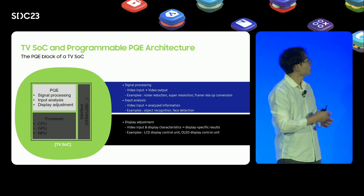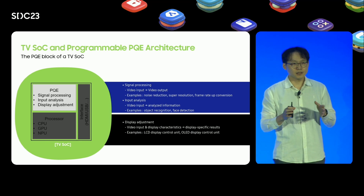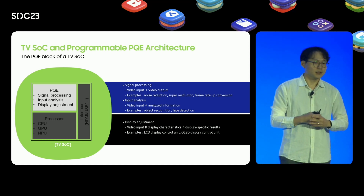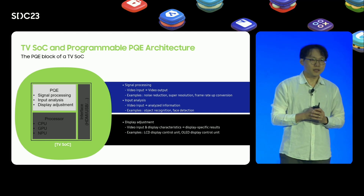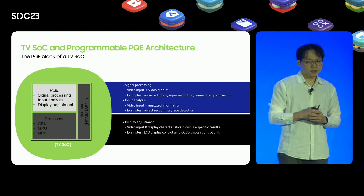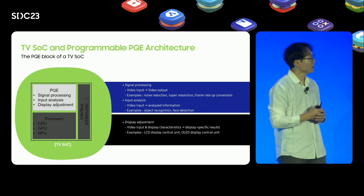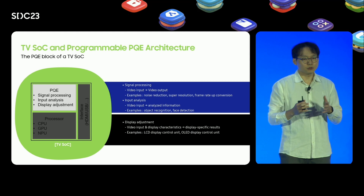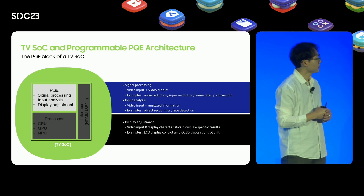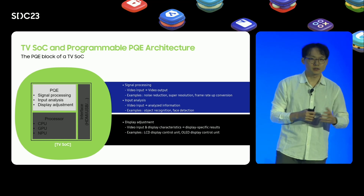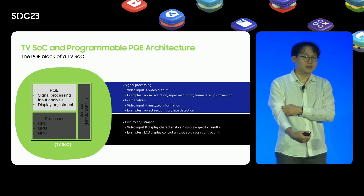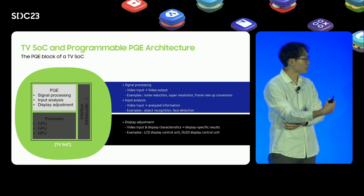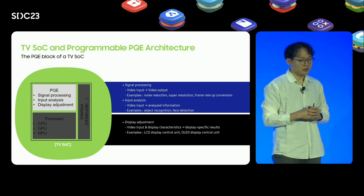The PQE inside TBSOC can be divided into three main sections. Firstly, signal processing takes video as an input and produces video output. Academically, it corresponds to image processing, and specific examples include noise reduction, super resolution, frame rate conversion, and so on. For better understanding of the latter part of this presentation, I will give a simple explanation about super resolution.